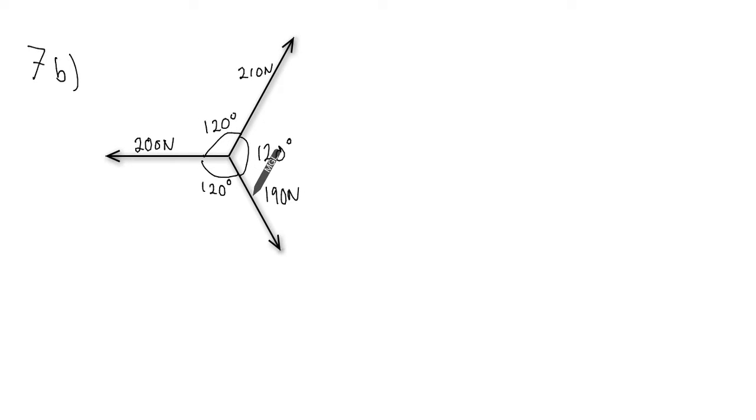So we're going to add together these three vectors. We're going to get this one here. We always add tip to tail, and my resultant vector will be this one here. It's going to be a small one, but it's right there. So let's figure this out using algebra.